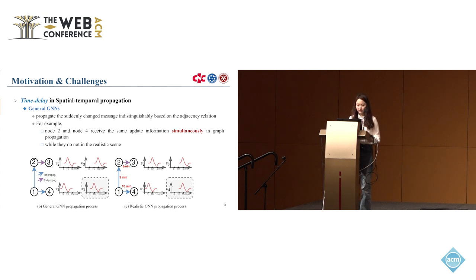We give an example here. This is a graph with time signal processes in each node. We can see there's a peak signal that happens at the fifth minute. After the first propagation, node 2 and node 4 receive the same updated information simultaneously in graph propagation. The peak signal happens at the 10th minute. But they do not in the realistic scene. As we can see from the right figure, the peak signal actually happens at the 15th minute. We call this a time delay.